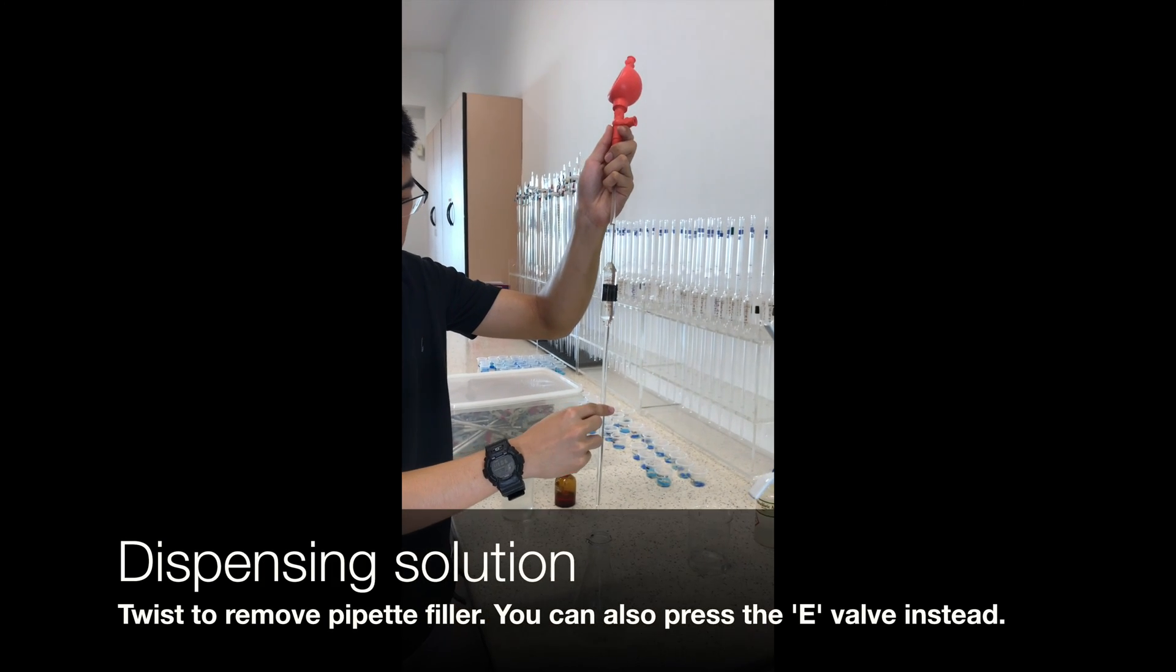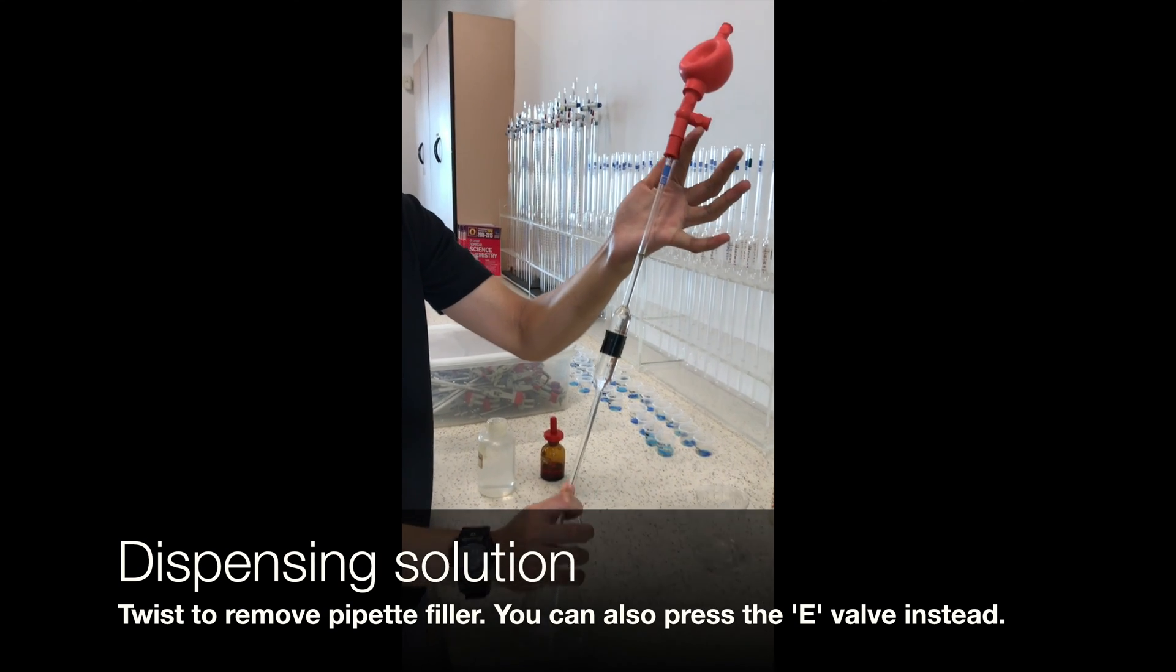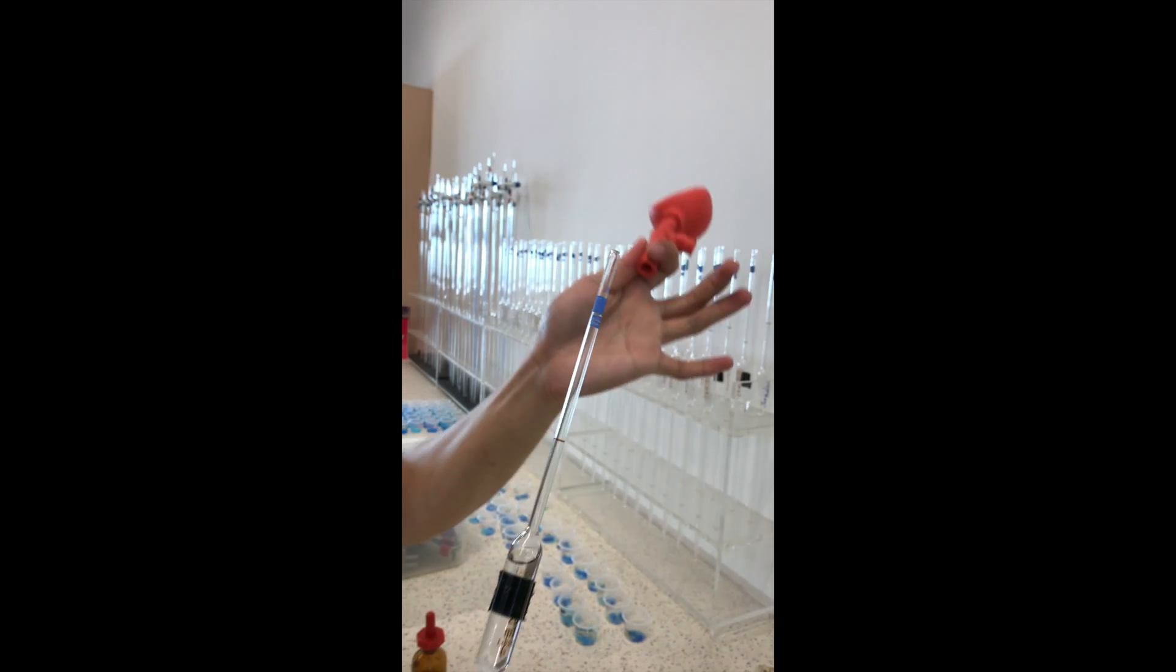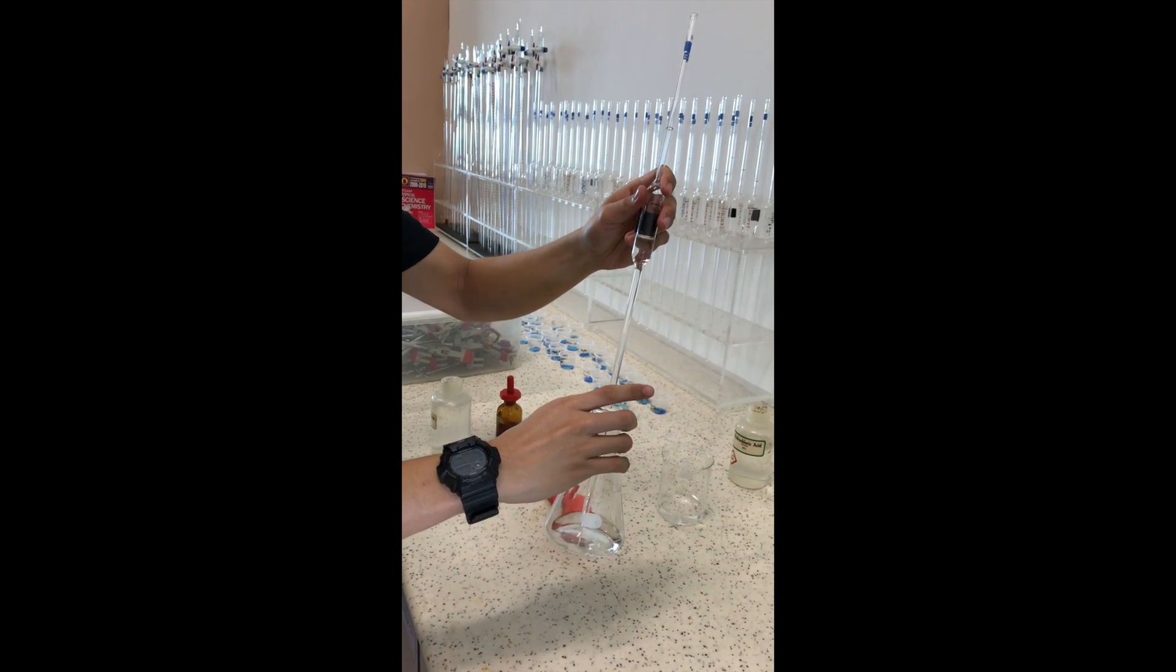To dispense the solution, we twist gently to release the pipette filler and slowly allow the liquid to drain into the conical flask.